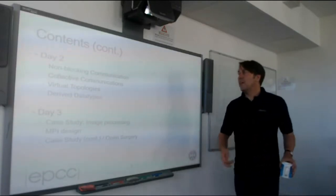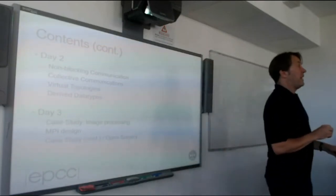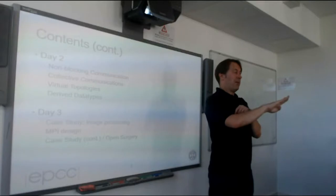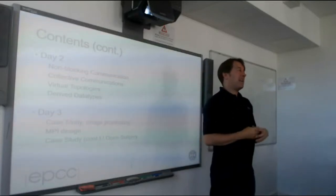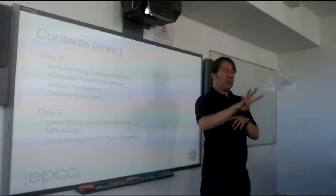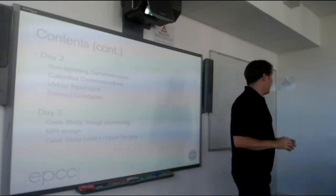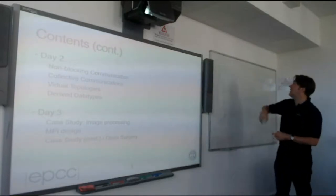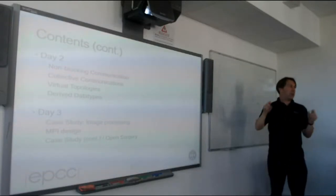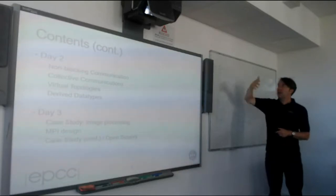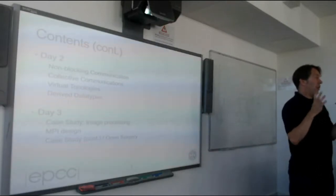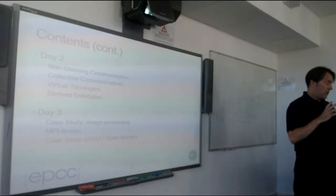The other use of derived data types is to send strided data. You could always copy strided data into a buffer, send it, and unpack it on the other side, but that's ugly and copying is slow. MPI allows you to define vector types, which are strided types with gaps. In practice, you use these with 2D data sets where one dimension is non-contiguous in memory — for example, when sending and receiving boundary data of a square array.